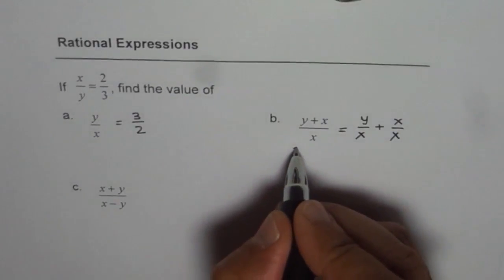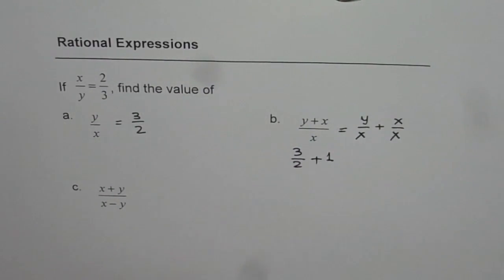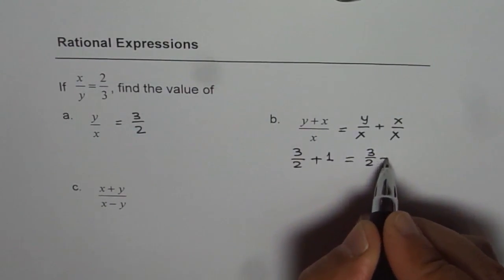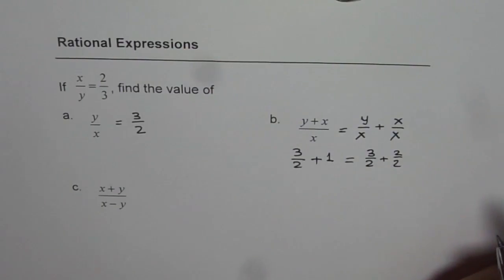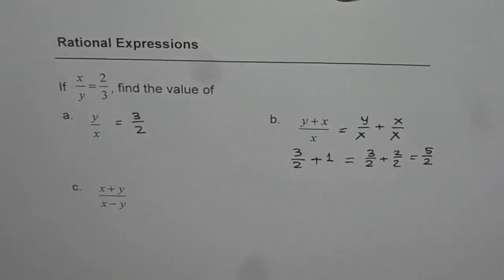So we get 3 over 2 plus x over x, which is 1. So it is 3 over 2 plus 1. Let's add them. To add them, we can write them as 3 over 2 plus 2 over 2. 2 over 2 is also 1. So that gives us the answer 5 over 2.